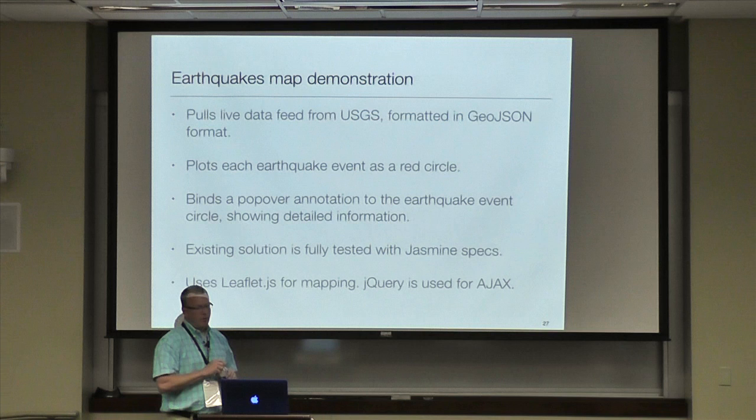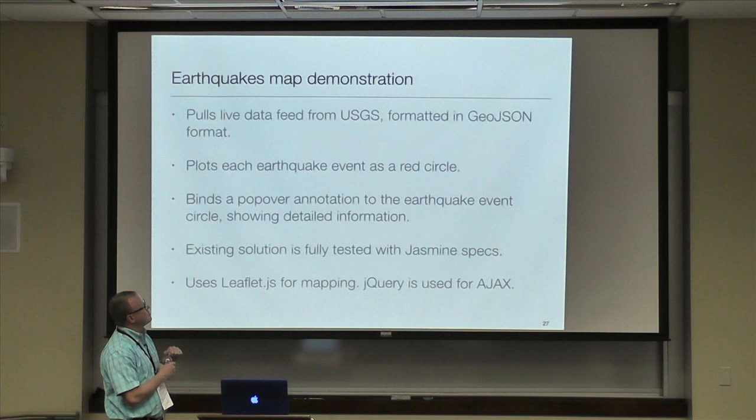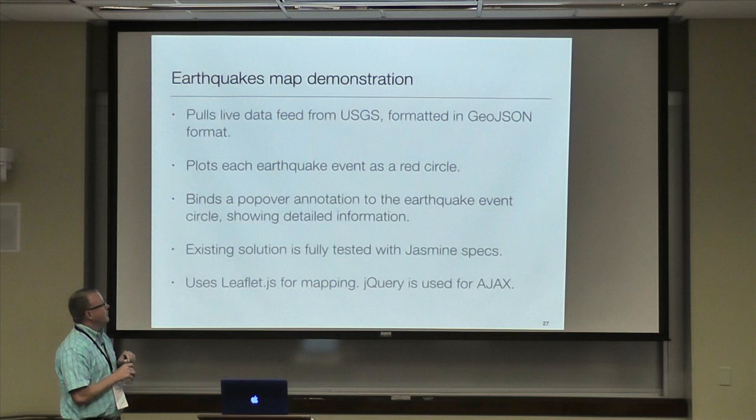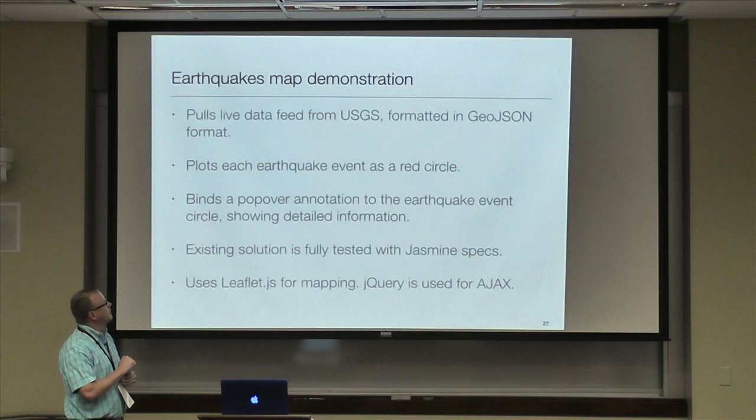For my earthquake map demonstration, I'm going to pull live data from the US Geological Survey. It's formatted in GeoJSON and it gets the daily earthquakes around the world and plots them on the map. Each earthquake shows up as a red circle, the radius of which is determined by the magnitude of the earthquake. I also bind a popover annotation to the earthquake event so you can see detailed information. The existing solution is fully tested with Jasmine spies.